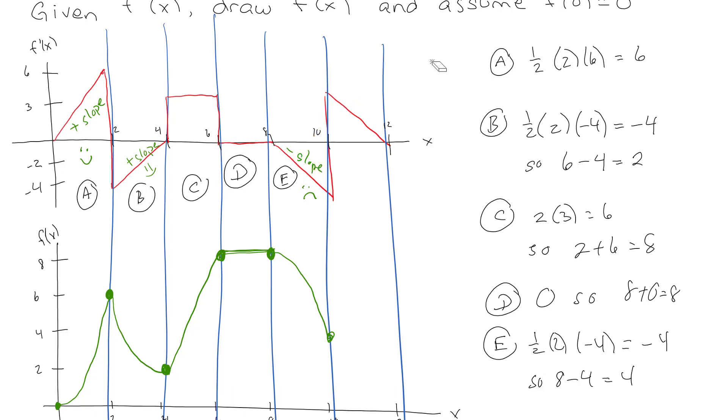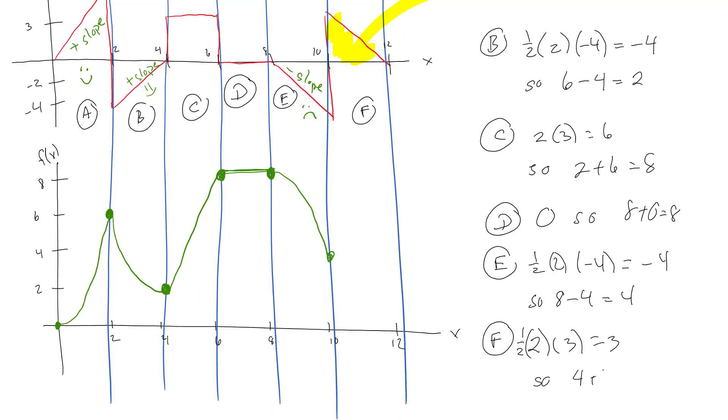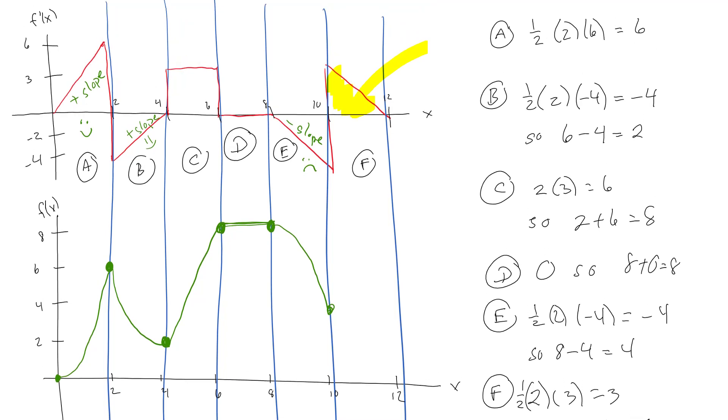Finally, we'll do section F. Section F is this dude right here. That's going to be one-half times two times three, so that's three. So it's going to be the previous number four plus three, getting us to seven. And this is still a negative slope. It's positive area, but negative slope, so sometimes people get confused about that. Positive area but negative slope, so it's still sad. It's like trying to be better but it can't, so it's still frowny.